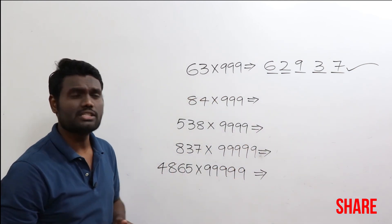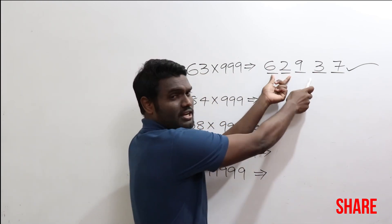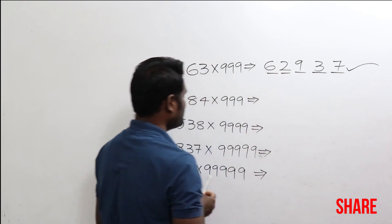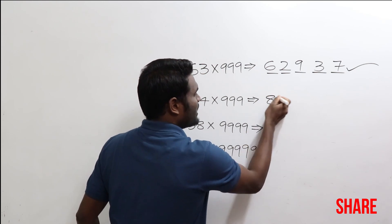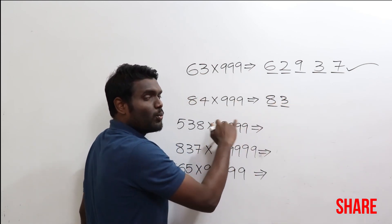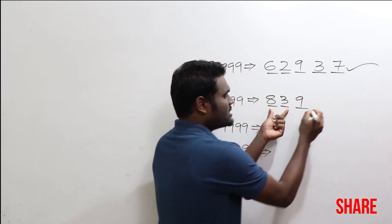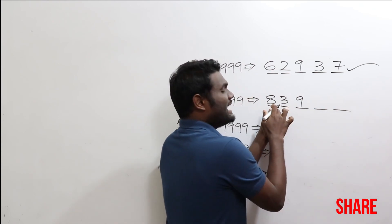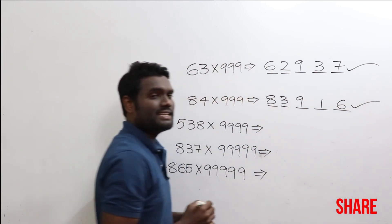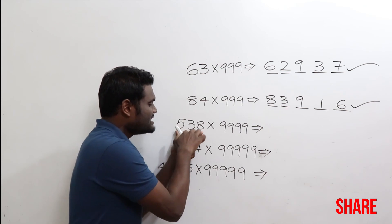Same procedure: 84 times 999. One less: 84 minus 1 is 83. You have two digits and three nines — one nine extra, so write that extra 9. Then for two more digits: for 8, add 1; for 3, add 6. So the answer is 83916.